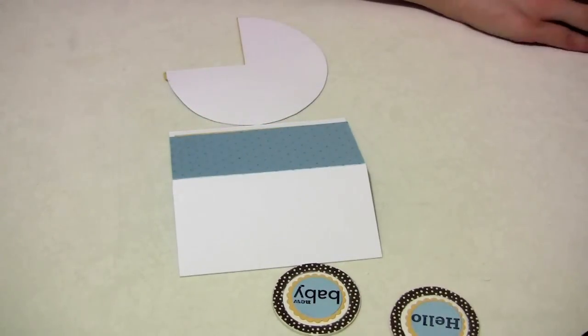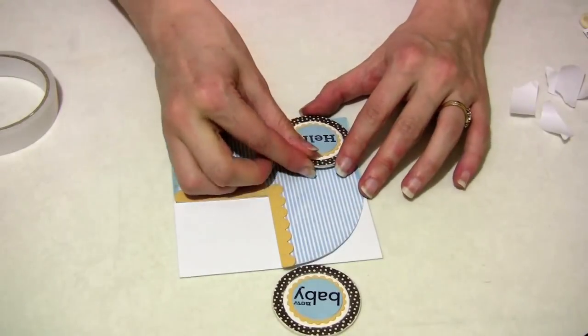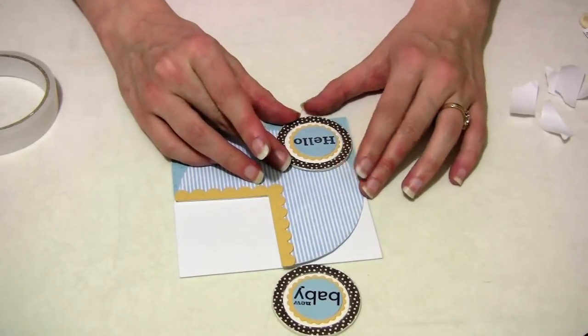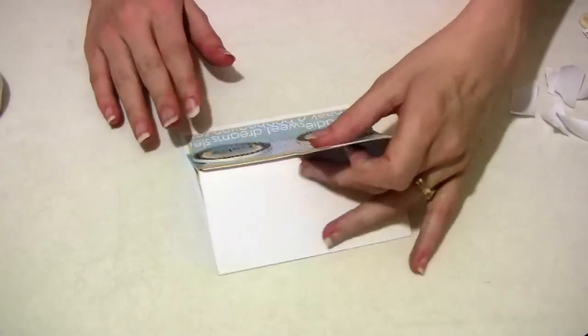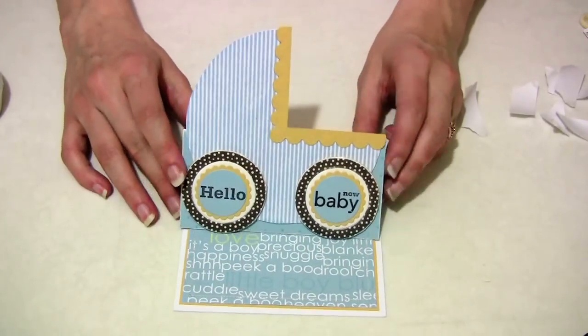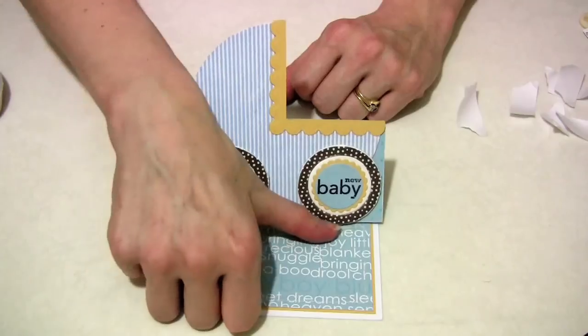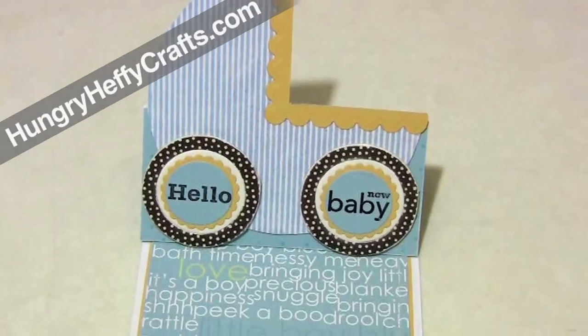Now let's assemble the card. I've put some blue polka dot cardstock on the front of it and I've stuck down my pram. Make sure that you only put sticky tape on the bottom half of the pram, not the hood of the pram, and then that will make sure that your pram is able to pop up once you push it back like this. So there you have it, that's your pop-up pram card. Thanks for watching and be sure to visit me at HungryHeafyCrafts.com.